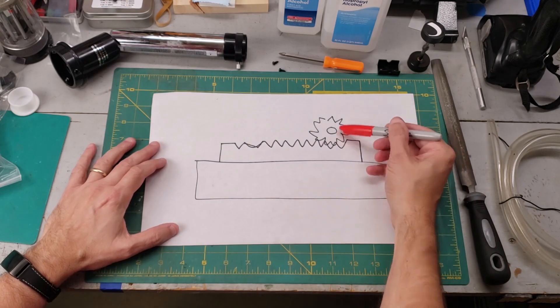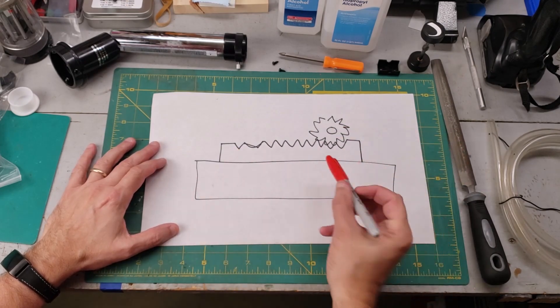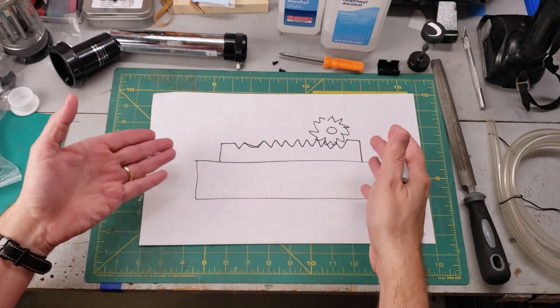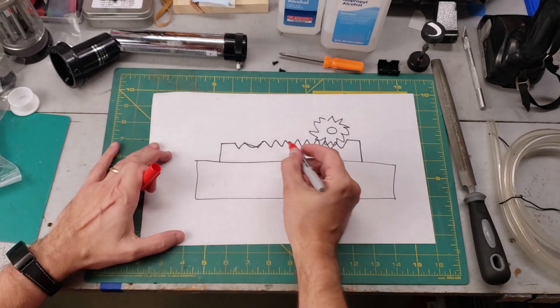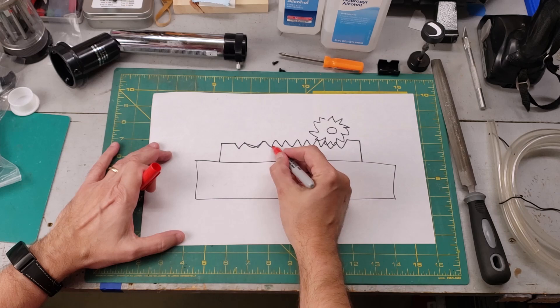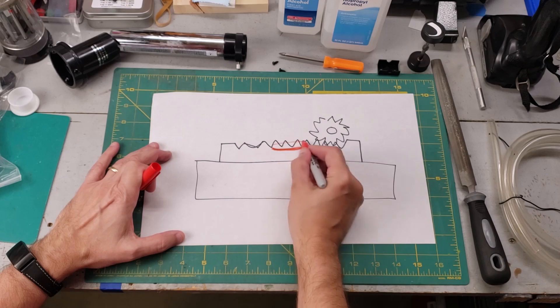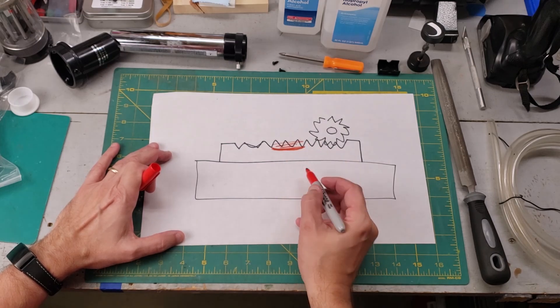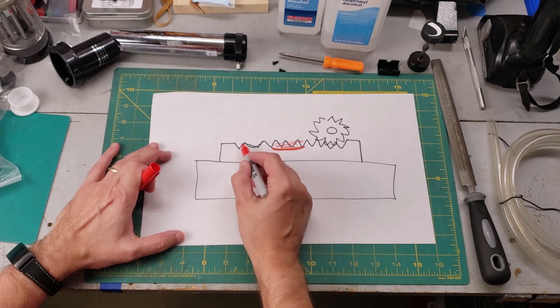Here's the pinion, here's the rack, here's the focuser tube. This is a healthy working system, but ours is not like that. Ours has some of these teeth removed. Basically we have a section where it's ground out like that where there's no teeth there.